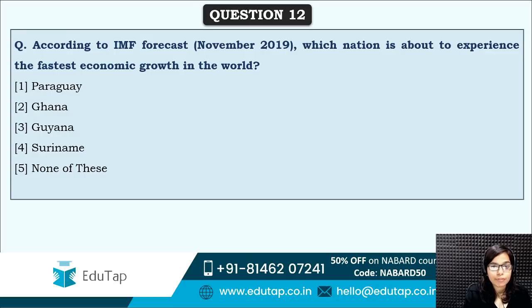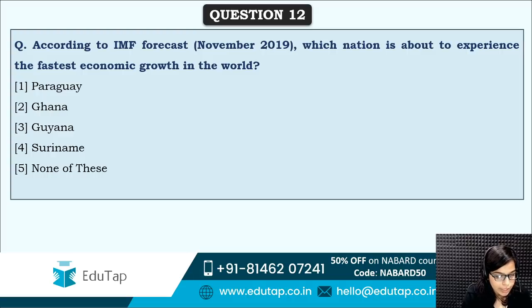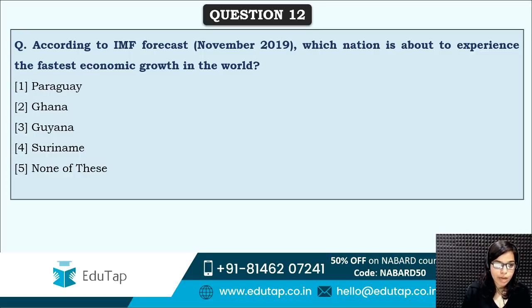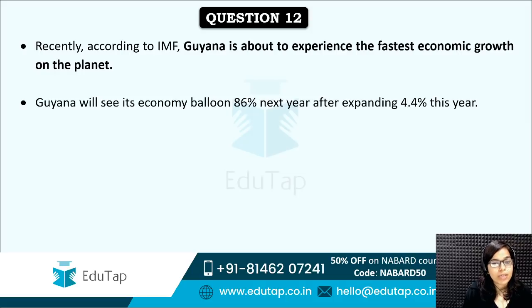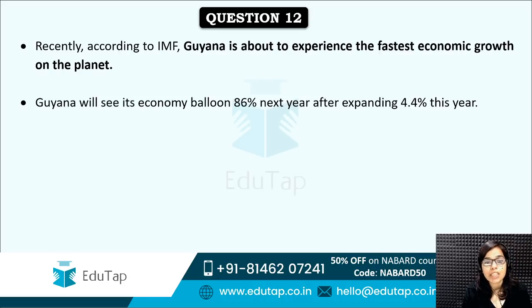Next: according to IMF Forecast, which nation is about to experience the fastest economic growth in the world? The correct answer is option three — Guyana. Guyana is going to experience the fastest economic growth because oil reserves have recently been found in the country. It is expected to see its economy balloon by 86% next year.